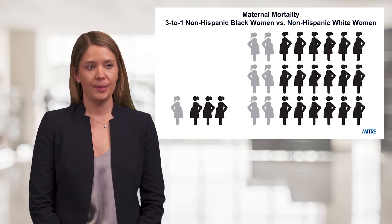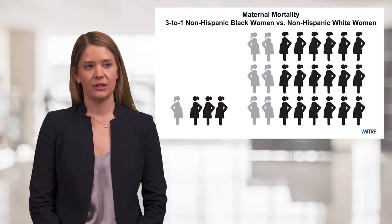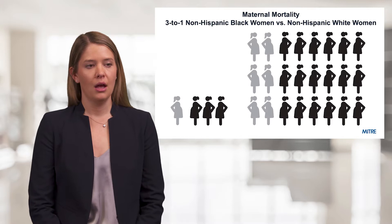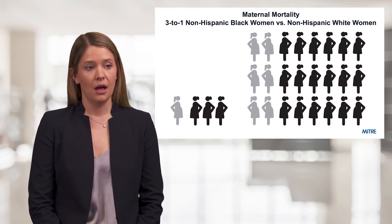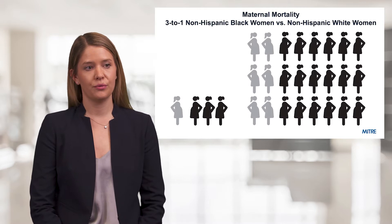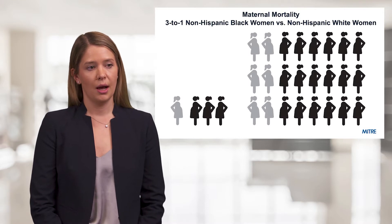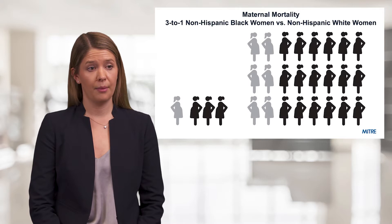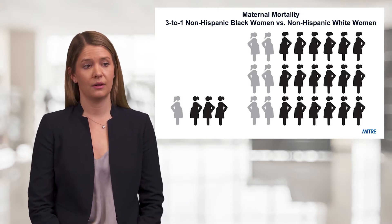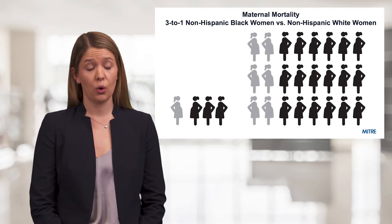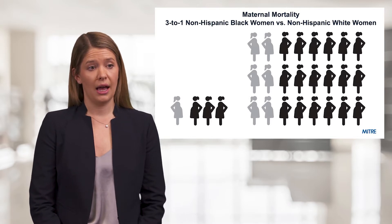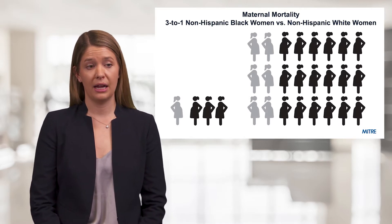Currently in the US, non-Hispanic black women are three to four times more likely to suffer from a pregnancy-related death than white women. Literature states that structural racism and inherent bias are contributing to these racial and ethnic disparities. Specifically, non-Hispanic black women have increased rates of cardiomyopathy, hypertensive disorders of pregnancy, and hemorrhage. There are also a number of social determinants of health contributing to these increased rates, and non-Hispanic black women are more likely to give birth at lower quality hospitals, which is thought to contribute to their increased racial and ethnic disparities in maternal mortality and morbidity rates.